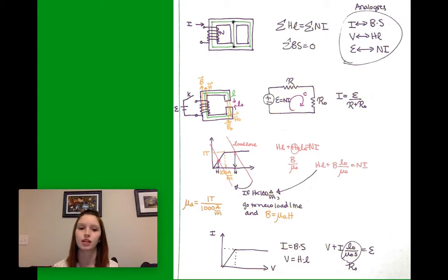And we can use these two equations then. Summation of H times L equals summation of n times i, and summation of BS equals zero. So you can see here in this smaller circuit with an air gap, that our equivalent circuit will be over here.